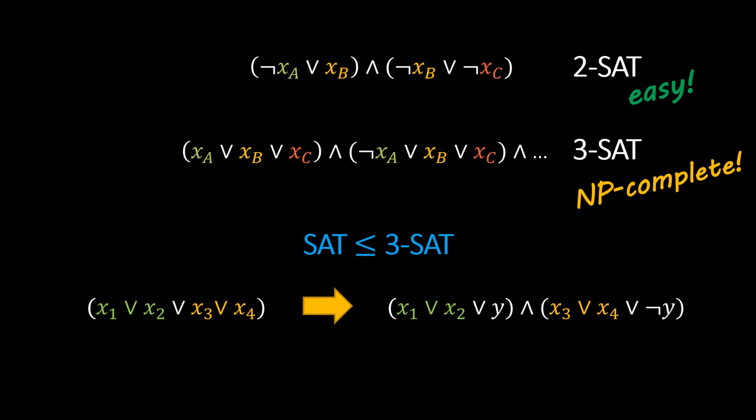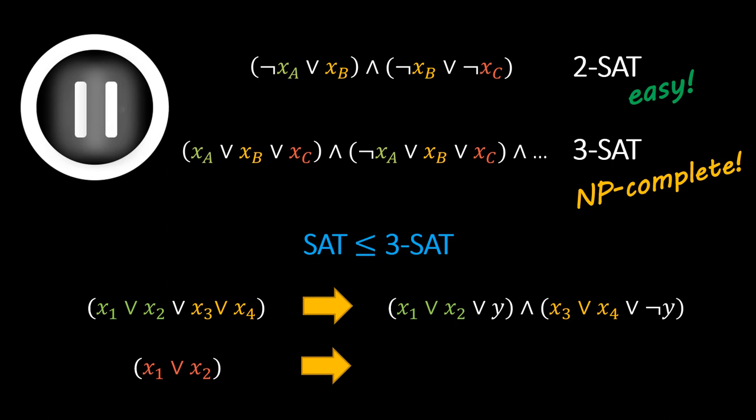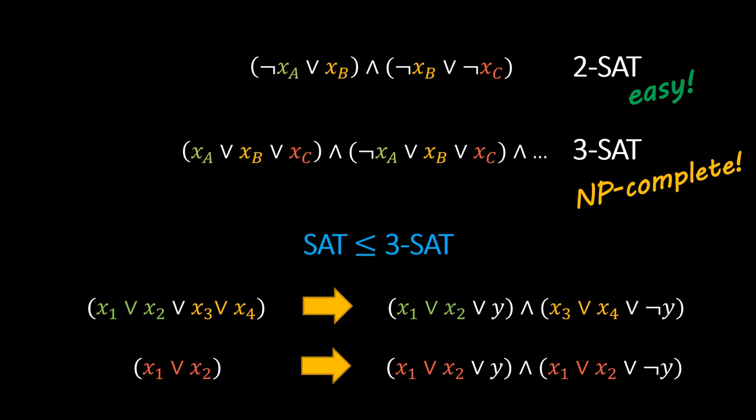But what about clauses of size 2? Pause the video right now to see if you can work out the required transformation. We proceed similarly by adding Y. One of the two resulting clauses will be satisfied because either Y or not Y are true, and the other will model our original constraint. Finally, clauses of size 1 can be handled by doing this transformation twice, first bringing them to size 2 and then to size 3. In conclusion, any CNF can be turned into a CNF with clauses of size precisely 3 in polynomial time, so 3-SAT is just as hard as general SAT.